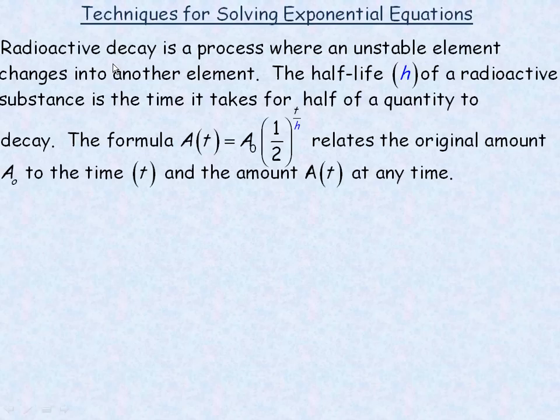First, a definition. Radioactive decay is a process where we have an unstable element and it converts or changes into another element because it's unstable. The half-life of a radioactive substance is the time it takes for half of it to decay or to change into another element.